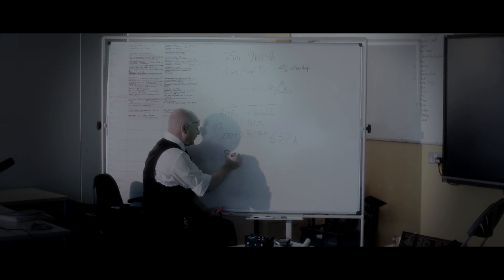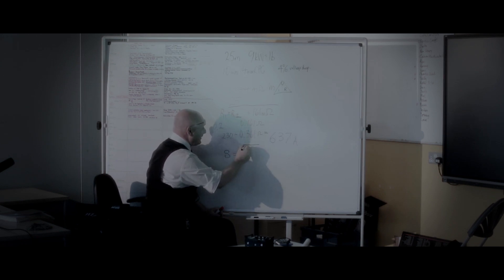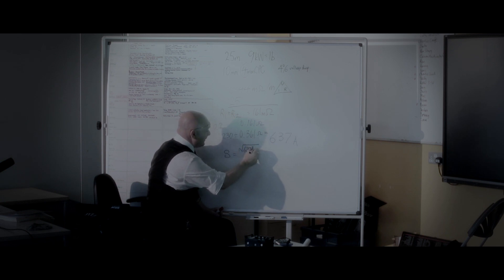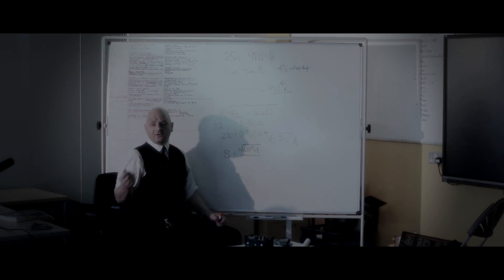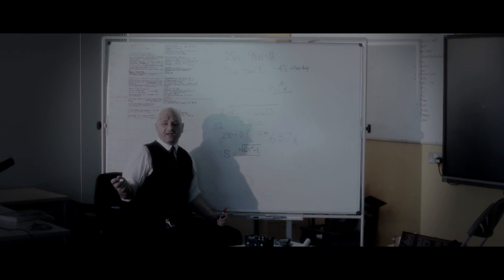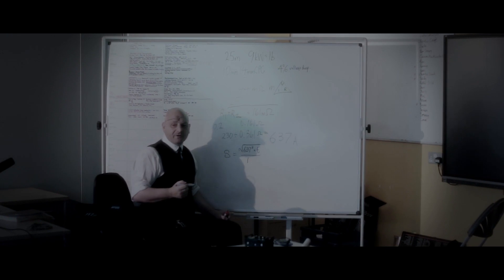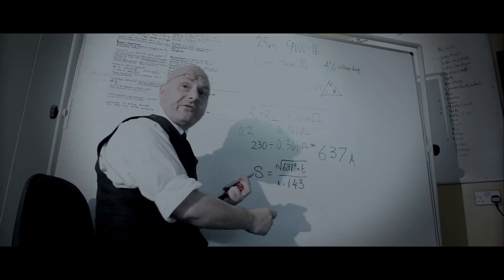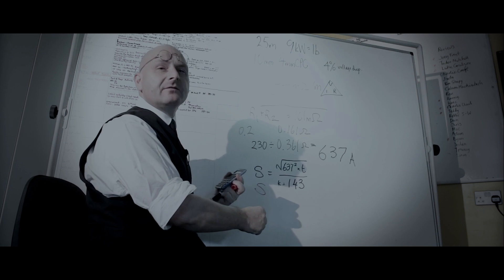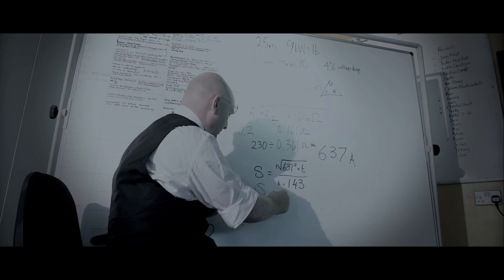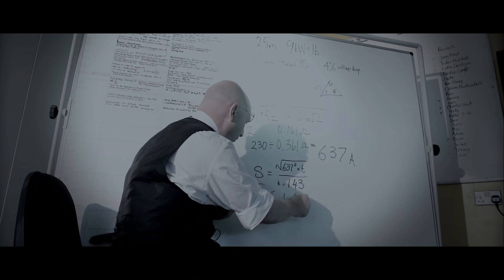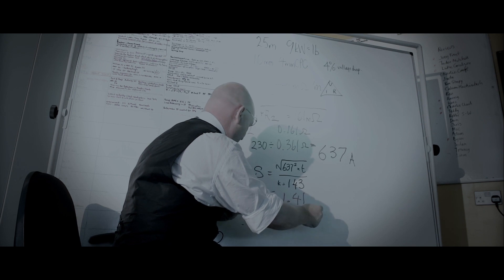S equals the square root of I squared — which was 637 — times time. We were using the 90 degree multicore thermosetting cable, so K is going to be 143 instead of 115. The answer to this is S equals 1.41 millimeters.